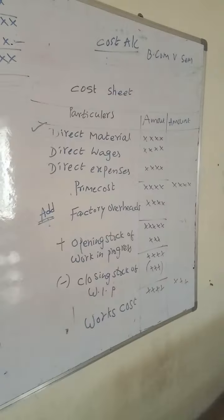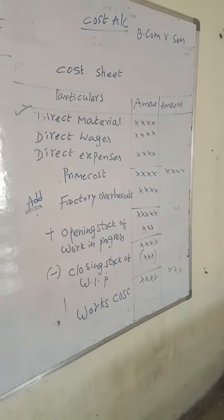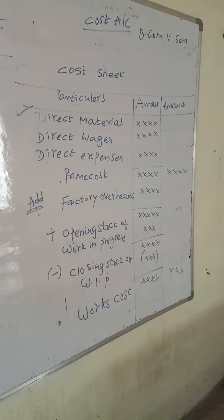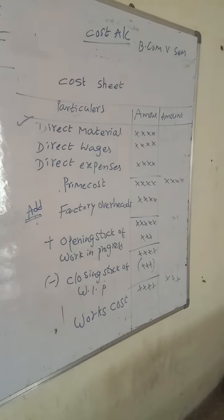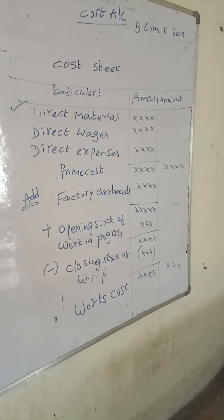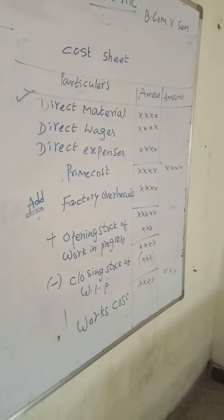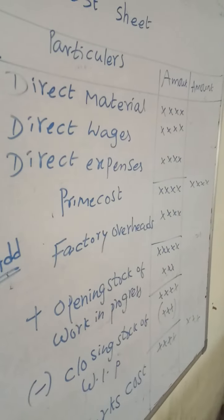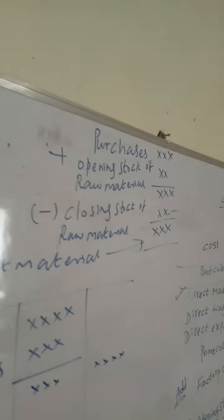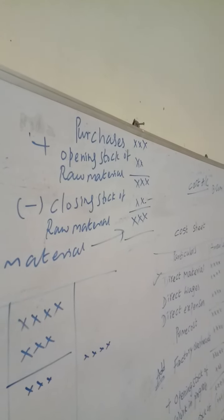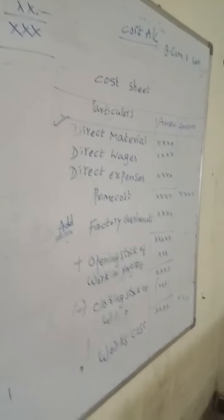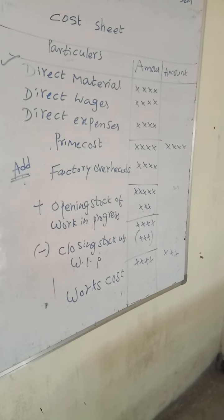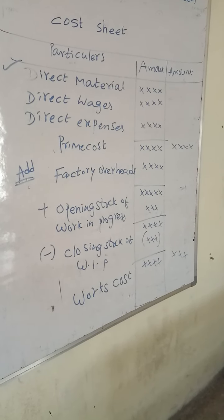My dear students, we have to prepare a cost sheet. If you add direct materials, direct wages, and direct expenses, you will get prime cost. The direct material consumed by production is called direct materials or material consumed. Prime cost consists of three components: direct materials, direct wages, and direct expenses.